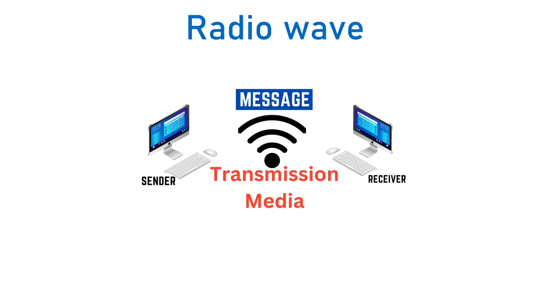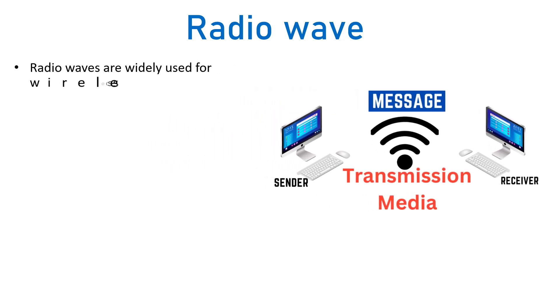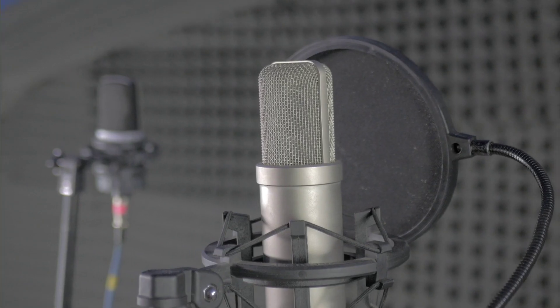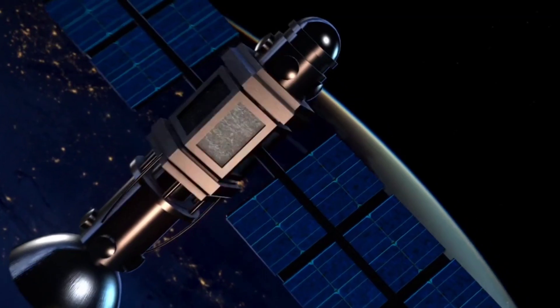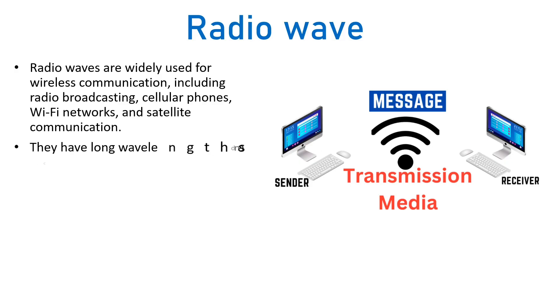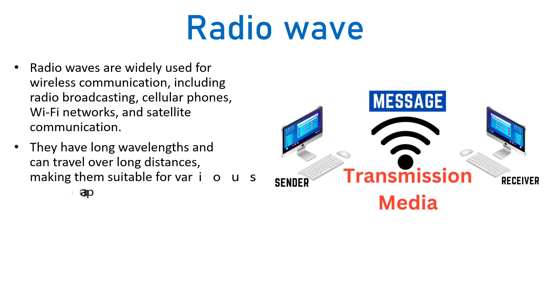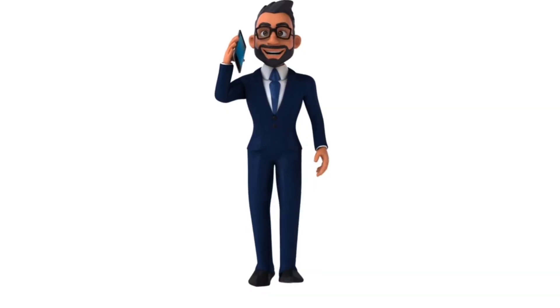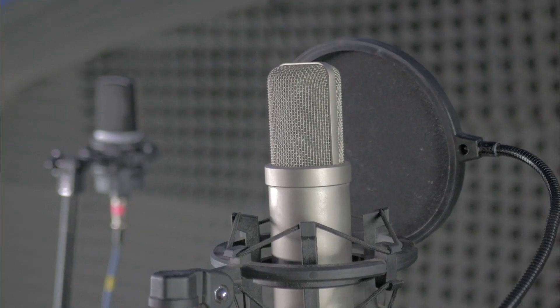Radio waves are one of the widely used unguided transmission media. They are used for wireless communications including radio broadcasting, cellular phones, Wi-Fi networks, and satellite communications. Radio waves have long wavelengths and can travel over long distances, making them suitable for satellite communications, cellular phone communications, and radio broadcasting.